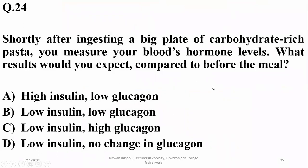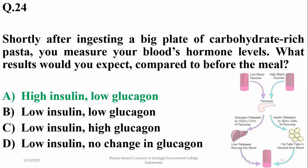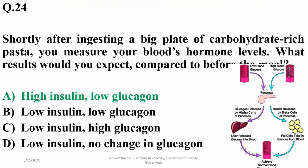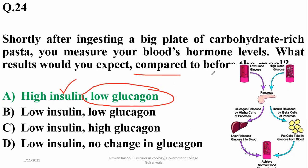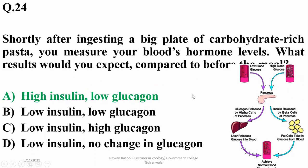Shortly after ingesting a big plate of carbohydrate-rich pasta, you measure your blood's hormone levels. What results would you expect? High insulin and low glucagon — alpha is the right option. After carbohydrate-rich food, there will be high glucose level requiring insulin to lower it, and low glucagon compared to before the meal, when low blood glucose was stimulating glucagon release for glucose production from glycogen.